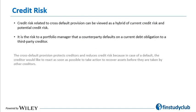Now let's look at the cross-default provision, which is interesting because here the credit risk could be viewed as a hybrid of current and potential credit risk. A cross-default provision implies that when the borrower defaults on one creditor, it amounts to having defaulted on all other creditors. If the counterparty defaults on some other creditor, that amounts to having defaulted on my exposure as well — so we consider it a blend of current and potential credit risk.